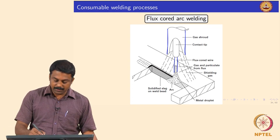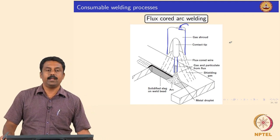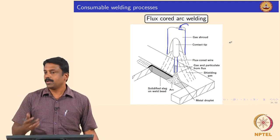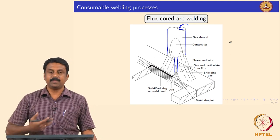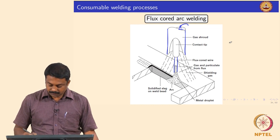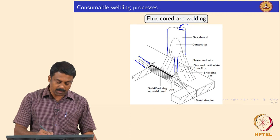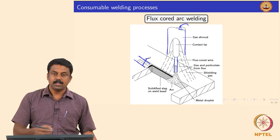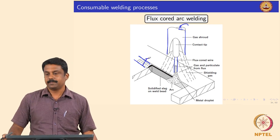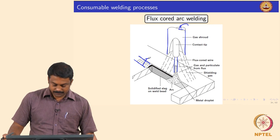Sometimes you also need shielding gas, but if you are using a self-shielded FCAW electrode, you do not need external shielding gas because the flux itself generates it. A slag is deposited on top of the weld pool which you break after welding.